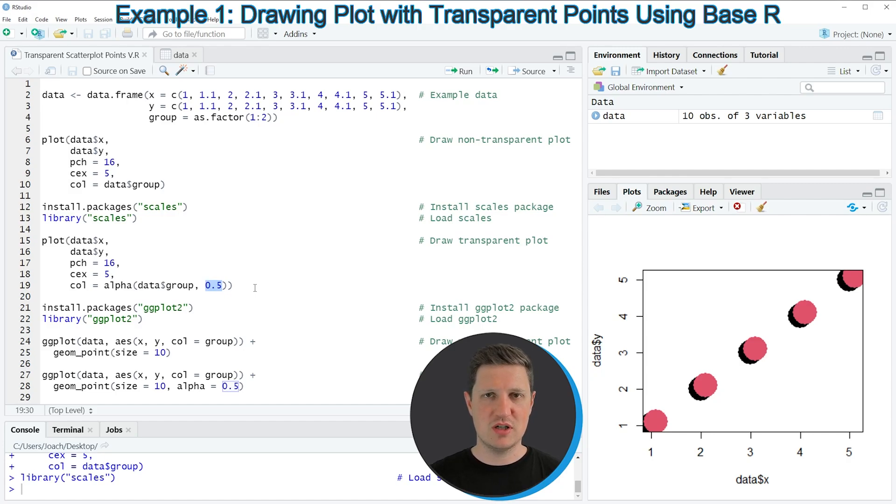So the larger this value is, the less transparent are our points. So if you run lines 15 to 19 of the code, you can see that our plot is updated, and this time the points are shown with a certain level of opacity.